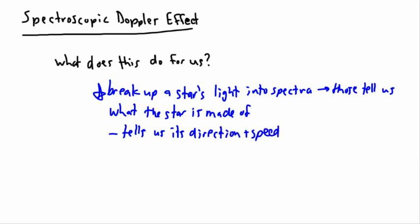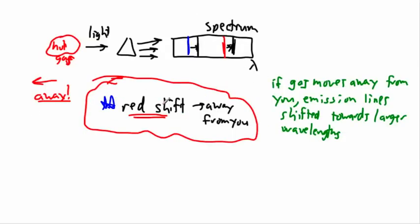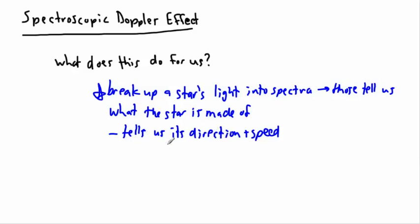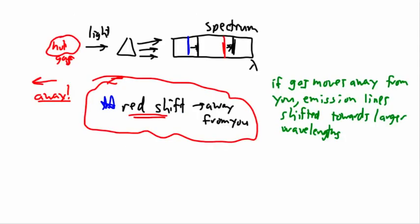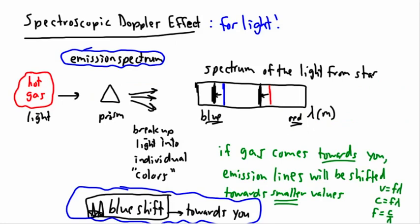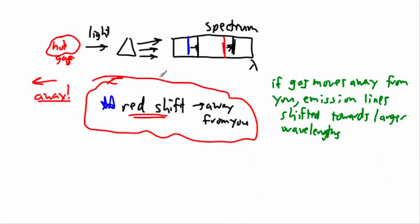If we see spectral lines that we expect to be in one place and they're all shifted towards the red, we know the star is moving away from us. Furthermore, we can even tell how fast it's going. So spectral lines tell us direction and speed. Whenever you have a spectrum and you see lines shifted towards blue, you know it comes towards you; shifted towards red, it's going away.